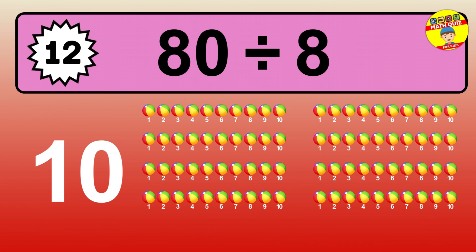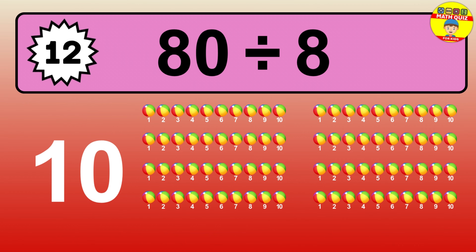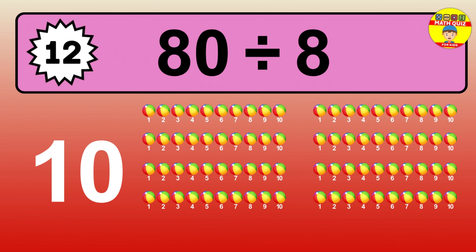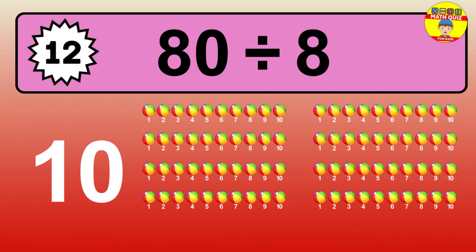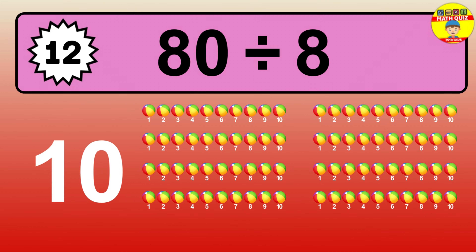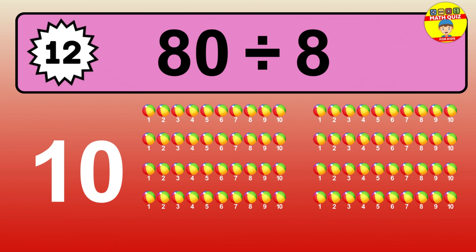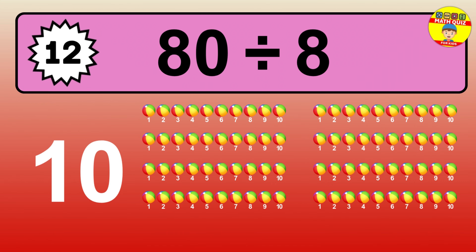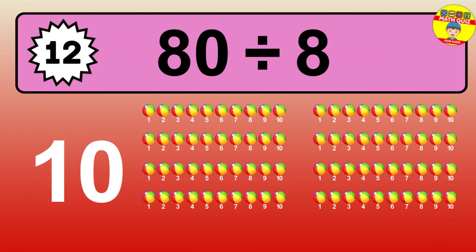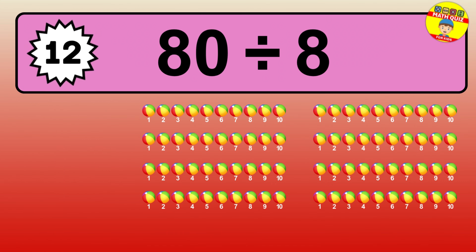80 objects to divide into groups of 8. How many groups can you make? Let's think about it. Ready to find out? Let's break it down. Let's imagine you have 80 objects. Can you picture them lined up? Now, think about splitting them.